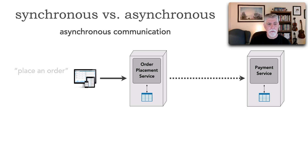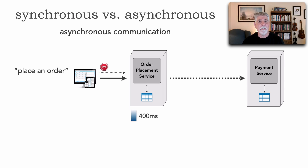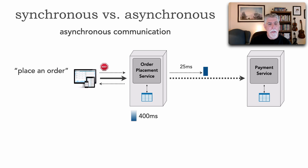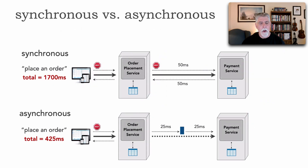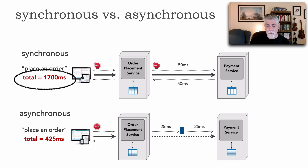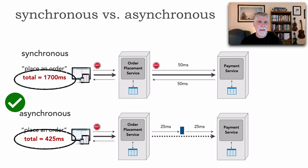But if I were to use asynchronous communication for that same operation, I have to wait for the order placement service as it does all of its inserting, validating, and generating order IDs. It sends a message to a queue — about 25 milliseconds — and then returns the response back to me. Adding this up, it's 425 milliseconds. So asynchronously only 425 milliseconds versus 1,700 milliseconds synchronously. This is one of the techniques for creating responsive systems and increasing overall performance.